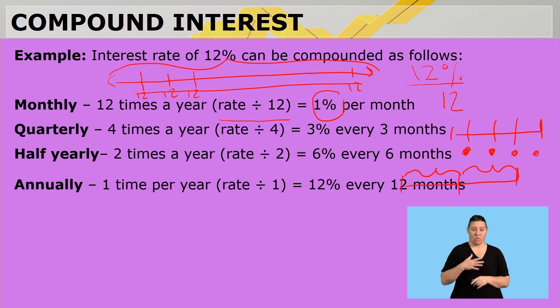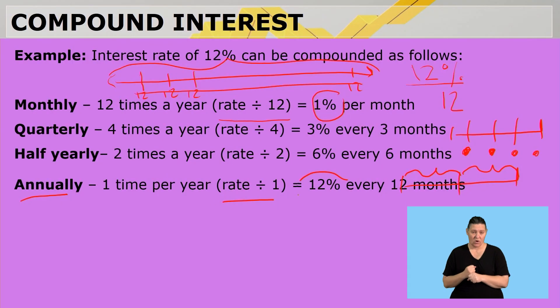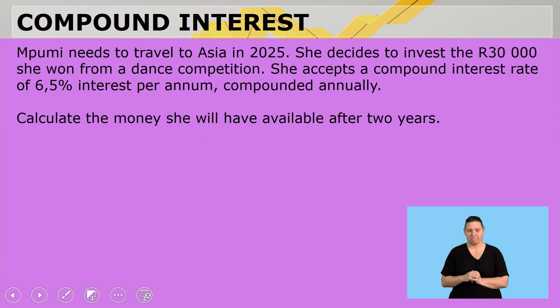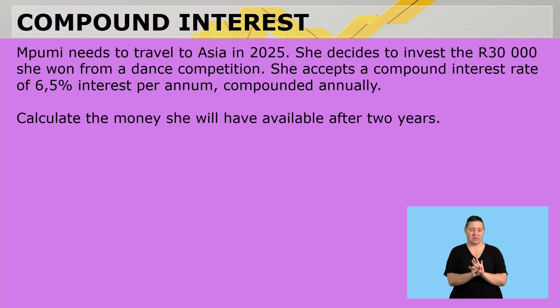If you invest annually, you can divide by one, but we know that's not necessary. So if you invest annually, it would be the full 12%. Let's look at an example.